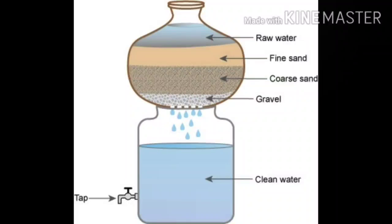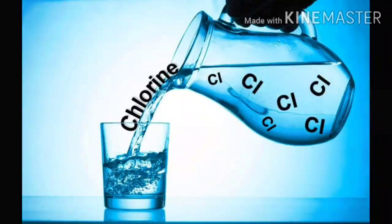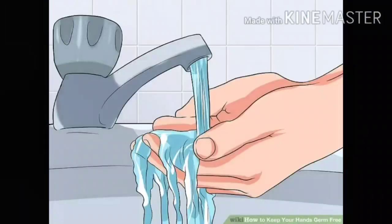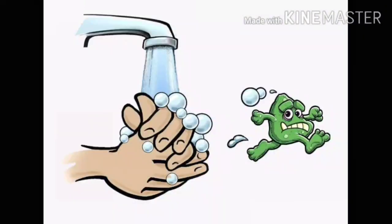After the water is filtered, a gas called chlorine is mixed with it. This gas kills germs. The clean germ-free water is then carried out to our homes by big pipes.